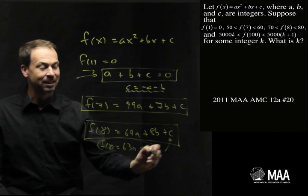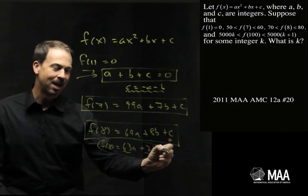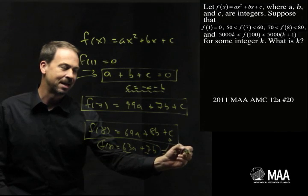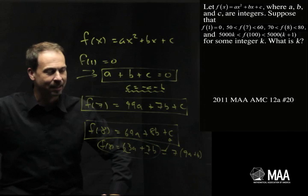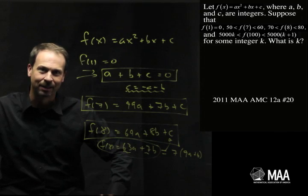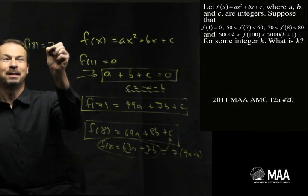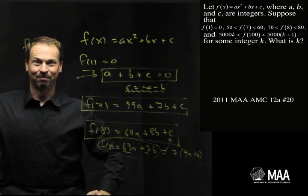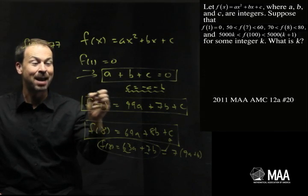But actually, this is meant to be a number in the 70s. And 63 and 7, I can see this is 7 times 9a plus b. That is, f(8) is a multiple of 7 in the 70s. f(8) must be 77. This is brilliant. I now have a piece of information.